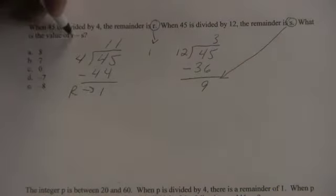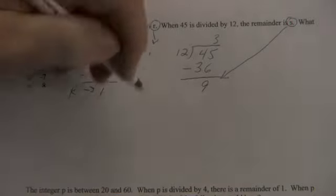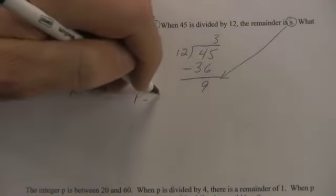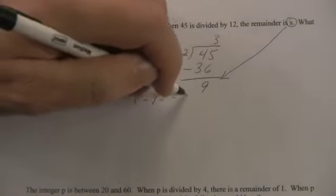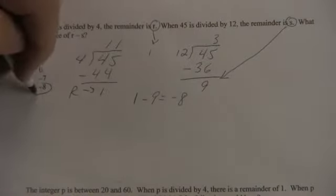Now the question says, what is the value of r minus s? Well, r is 1 minus 9. 1 minus 9 is negative 8. Choice e is correct.